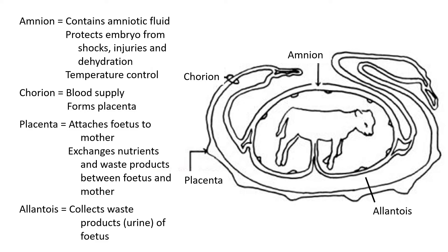Let's start by looking at what the fetus actually looks like. The fetus is within a couple of embryonic membranes and we need to look at the purpose of each one. Here's a quick sketch of the fetus inside the uterus. You must be able to identify the four main layers and their functions. The first membrane surrounding the fetus is called the amnion, which contains the amniotic fluid. This fluid protects the fetus from shocks, injuries, and dehydration.